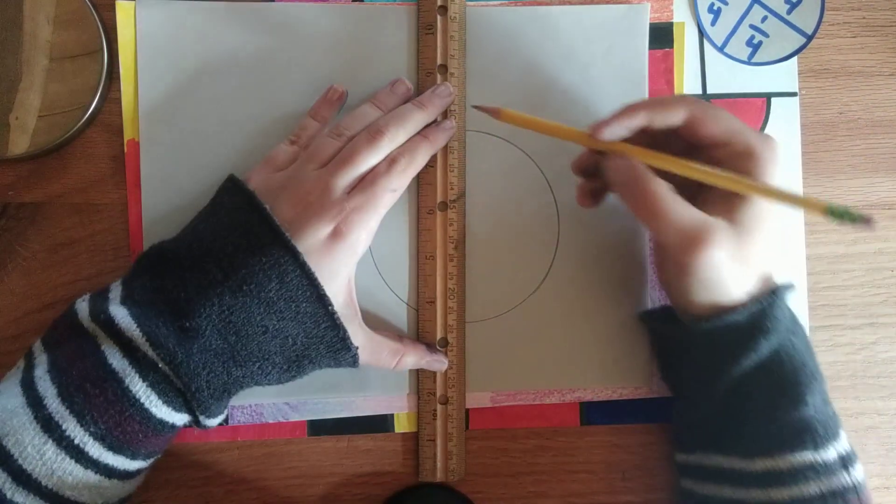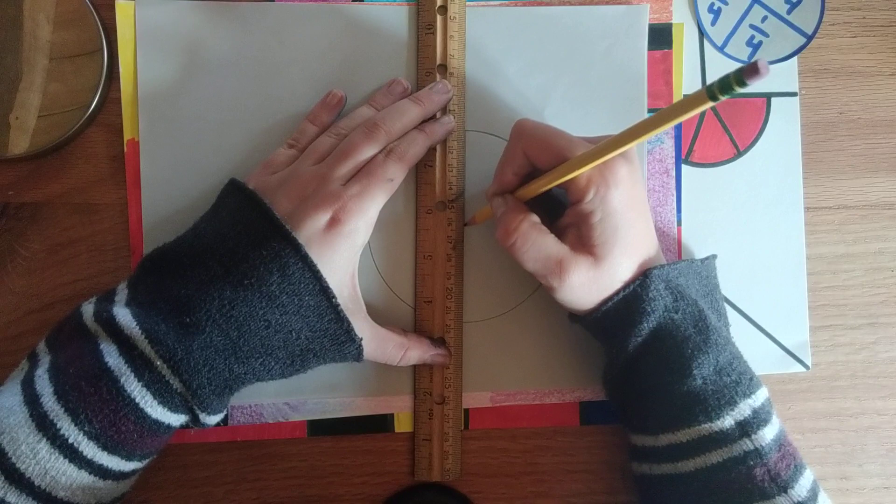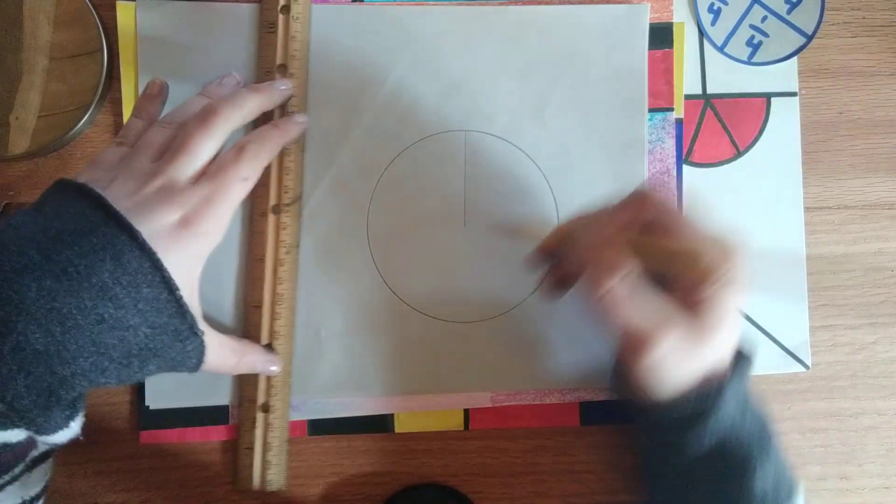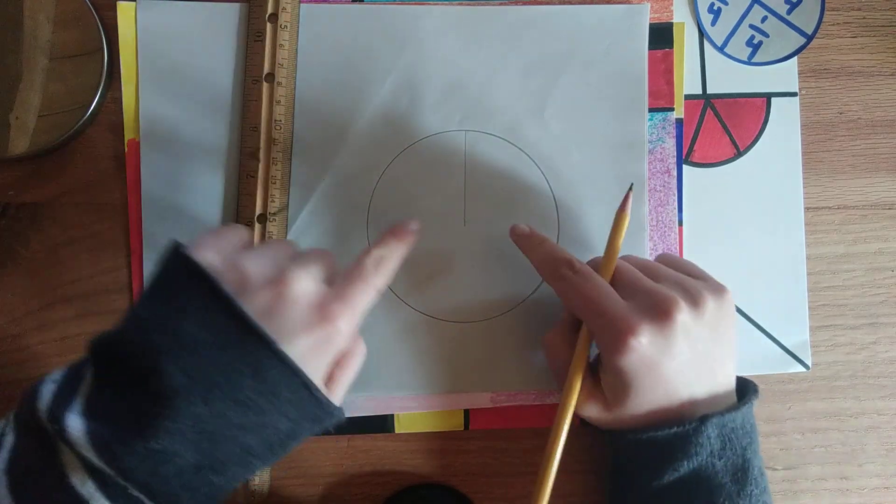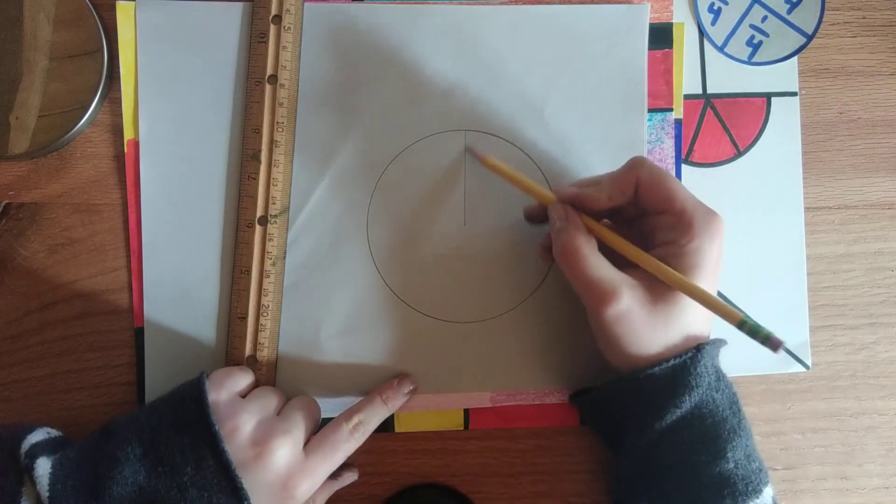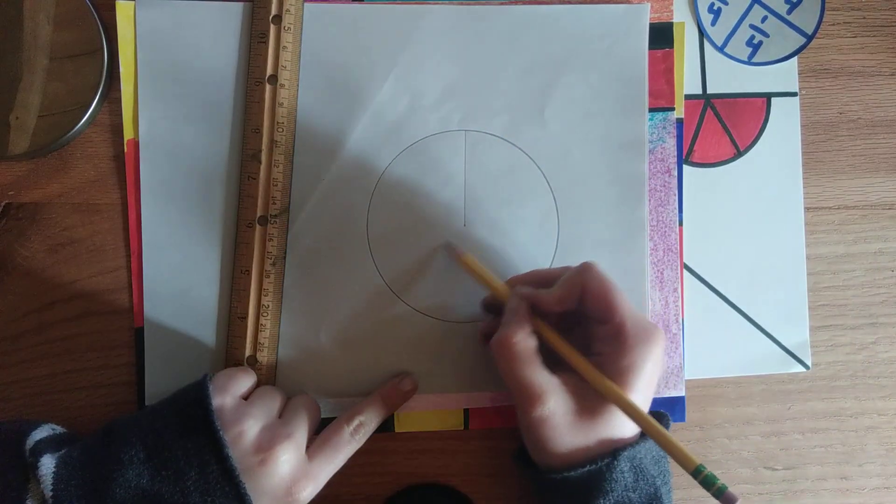I'm going to scooch it over a little bit. I'm going to draw a line halfway down my circle in the middle. I'm not going to bring my line all the way down because that would make two parts. I want three parts.